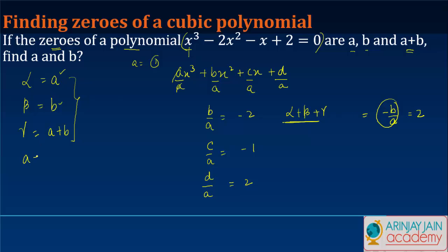α + β + γ in this case is going to be a + b + a + b is equal to 2. Or in other words 2a + 2b is equal to 2. Take 2 common, a + b is equal to 1. So this is the first equation that we get. We haven't got the value of a and b individually but we know that their sum is equal to 1.